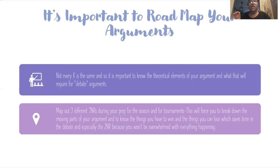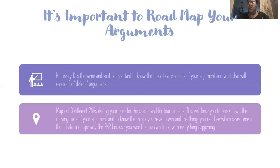You need to map out three different 2NRs during your prep for the season, but also during your prep in between tournaments. A lot of the times at the end of the debate there's a lot going on, a lot of moving pieces, and if you've not already conceptualized the 2NR that you want to go for, it's going to be harder to do the backlog work, to work from the back and anchor the vision, the purpose, the goal of the 2NR speech. This will help you understand what you have to win in order to make your arguments, and the things you can lose — which saves you time, because now you are being very concise and functional about the 2NR you are giving in rounds.